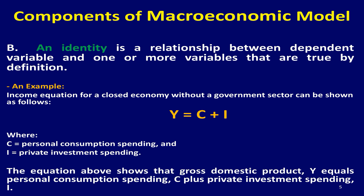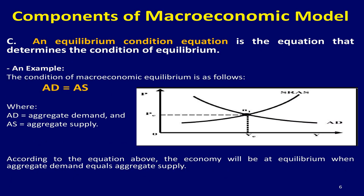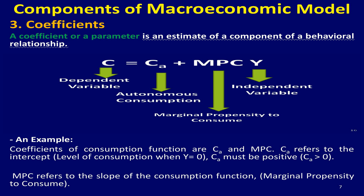The equilibrium condition equation is an equation that determines the condition of equilibrium. For example, when aggregate demand, abbreviated as AD, equals aggregate supply, abbreviated as AS, the macroeconomic equilibrium will be achieved. The coefficient is an estimate of a component of a behavioral relationship.